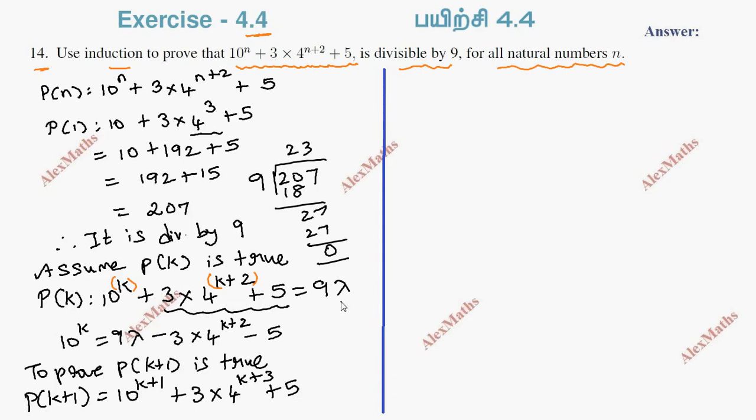To prove this is divisible by 9, first substitute 10^k. From P(k), we have 10^k = 9λ - 3 × 4^(k+2) - 5. So multiply the whole thing by 10.